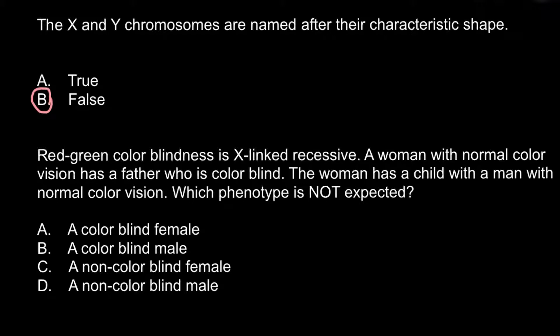Next question. Red-green color blindness is X-linked recessive. A woman with normal color vision has a father who is colorblind. The woman has a child with a man with normal color vision. Which phenotype is not expected? Here are the different variants of the possible phenotypes. In order to solve this problem, we need to make a karyotype. We have a female whose father was affected with red-green color blindness.